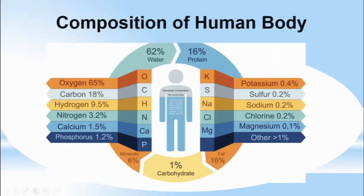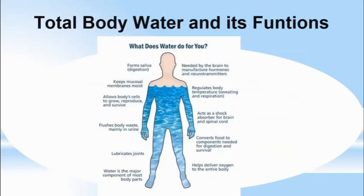Here you can see the composition of the human body: 62% water, 16% protein, 16% fats, 6% minerals, and only 1% carbohydrates. Among different ions: calcium 1.5%, potassium 0.4%, sulfur 0.2%, sodium 0.2%, chlorine 0.2%, magnesium 0.1%. Phosphorus is around 1.2%, nitrogen 3.2%, hydrogen 9.5%, carbon 18%, and oxygen 65%.